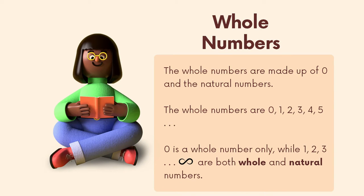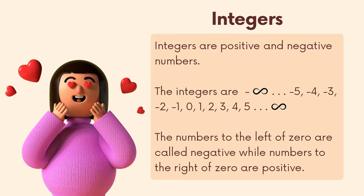Whole numbers are made up of zero and the natural numbers. The whole numbers are zero, one, two, three, four, five, going on up into infinity. Zero is a whole number only, while one, two, three, and so on are both whole and natural numbers.